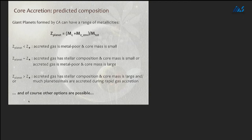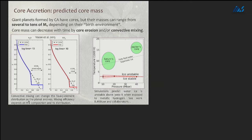Hopefully when you leave for the coffee break you already have this concept that core accretion can lead to a very large range of compositions and also core masses. Another thing about the core mass: when we make these giant planet formation models we start with the core, but the definition of the core is a bit tricky. We have a very long planetary evolution and during this evolution the core mass can change — we can have core erosion where material of the core mixes into the envelope. This can happen for chemical reasons, because of convection, or both. The point is that the core mass can decrease with time even if we start with a very massive core.